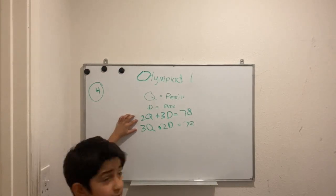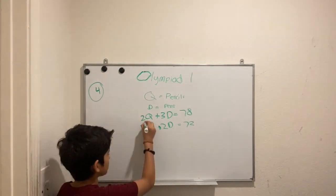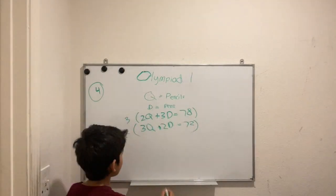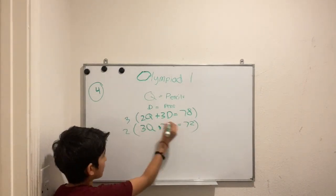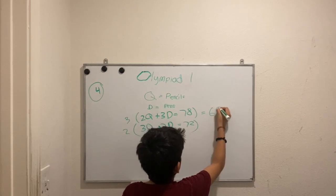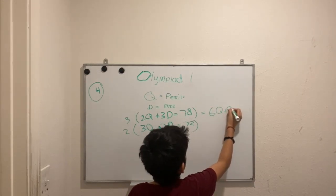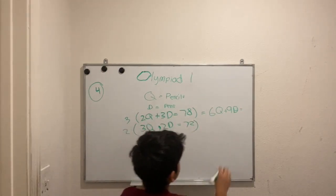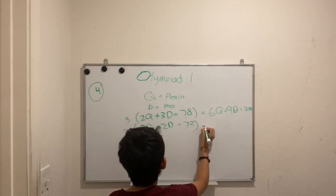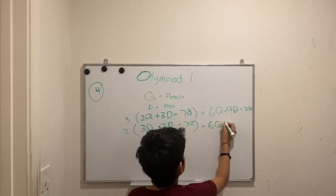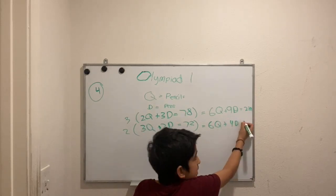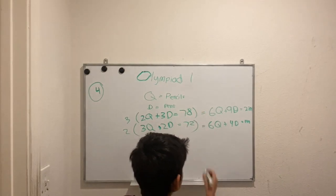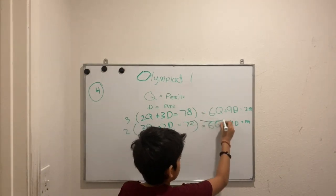We need to make two of the coefficients the same. Six is the closest common multiple, so we multiply the first equation by 3 and the second by 2. This gives us: 6q plus 9d equals 234, and 6q plus 4d equals 144.